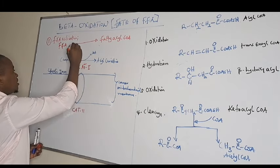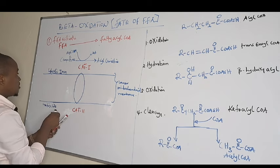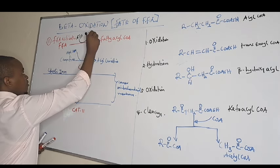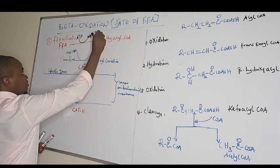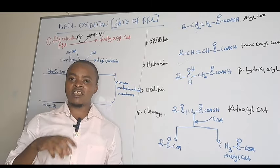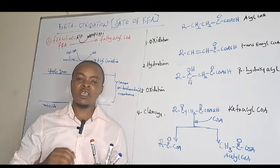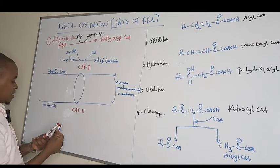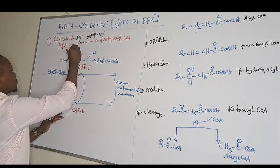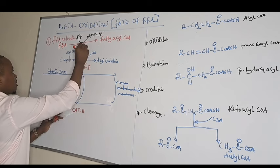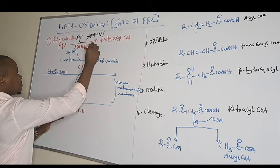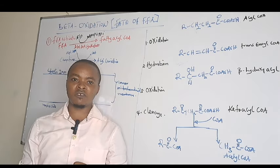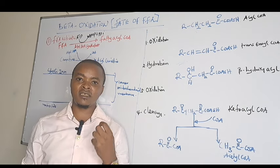Fatty acyl-CoA is formed in the presence of ATP, whereby ATP is hydrolyzed to AMP — adenosine monophosphate — with the production of a pyrophosphate. This is a high-energy compound equivalent to the utilization of two ATPs. This reaction occurs in the presence of an enzyme known as acyl-CoA synthetase, which transfers two phosphate groups from ATP onto free fatty acids to form fatty acyl-CoA.